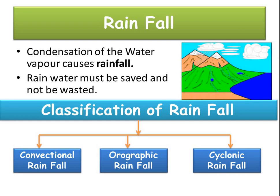Do you love rain? Playing in it, jumping in puddles and splashing water? Now, we will see what is rainfall. The condensation of water vapour causes the rainfall. Condensation is the process by which water vapour — water in gaseous form — turns into liquid, when molecules of water vapour cool and collect together as liquid water. You can see condensation on the outside of cold glasses or on warm windows.